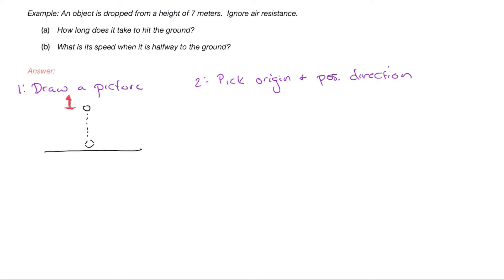I chose the origin to be located at where the ball starts, and I chose the positive direction to be upwards. The choice of origin and positive direction is arbitrary — it's a deep fact in physics that the outcome of our problem will not depend on this choice. For instance, you could make your origin at the ground or make your positive direction point down, and that would be fine. Steps three and four of my problem solving system are not relevant yet — we'll learn more about those in chapter five.